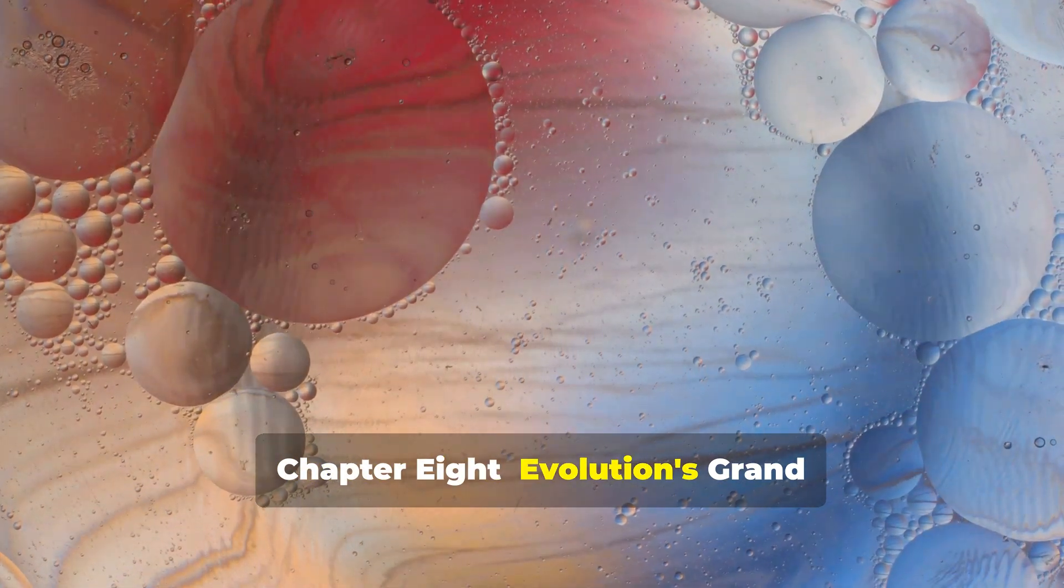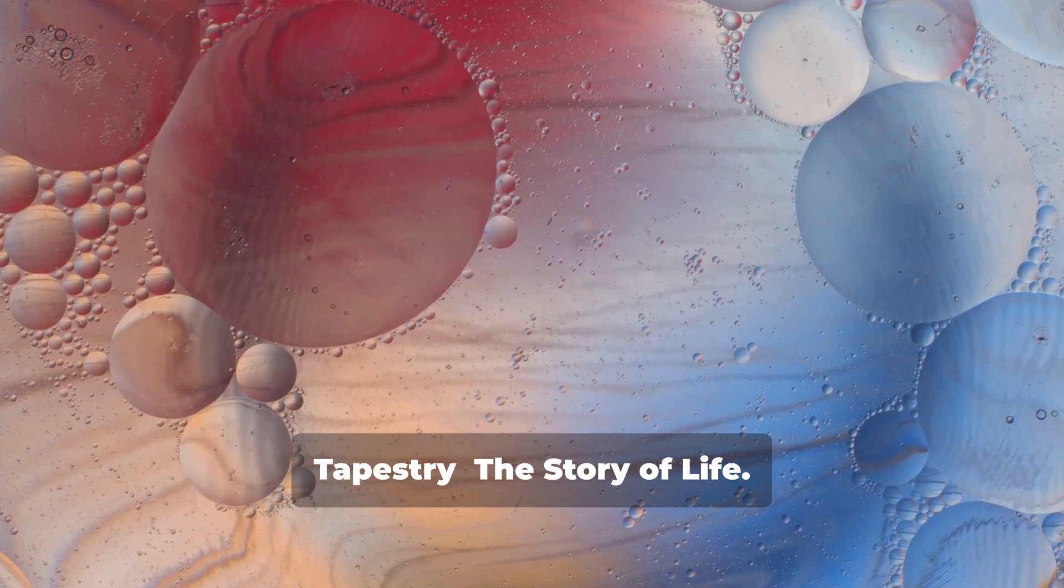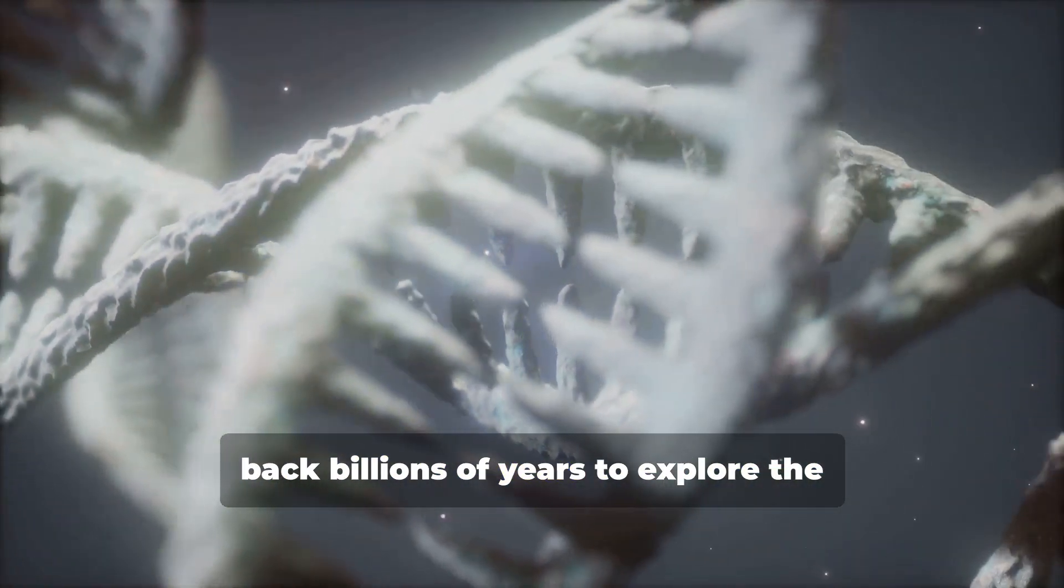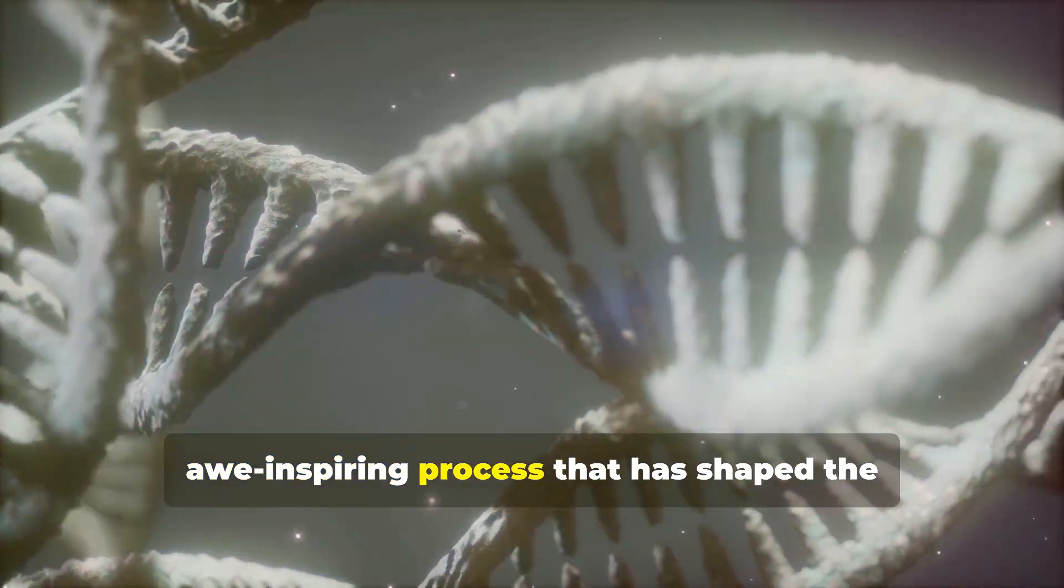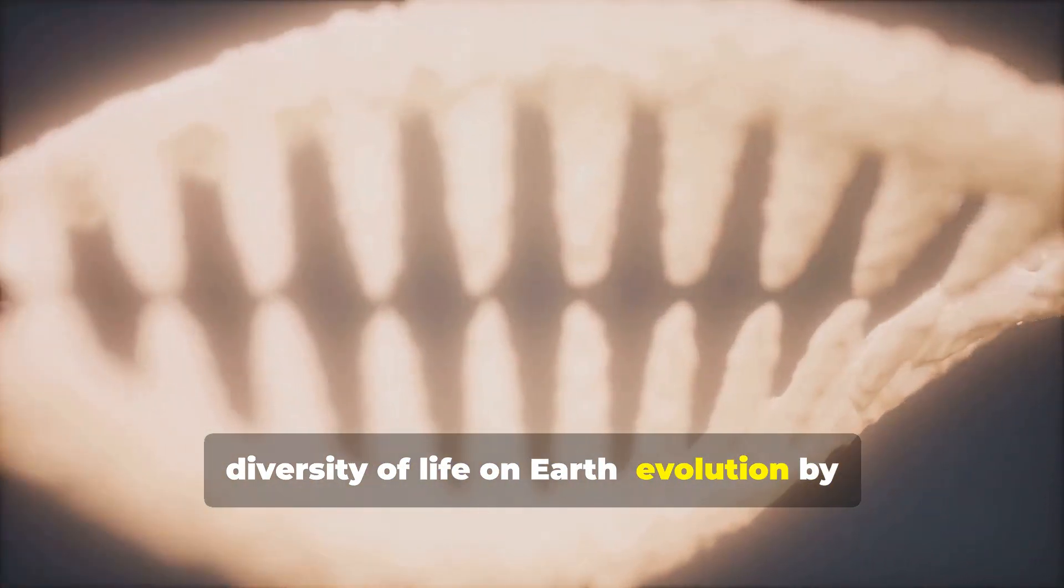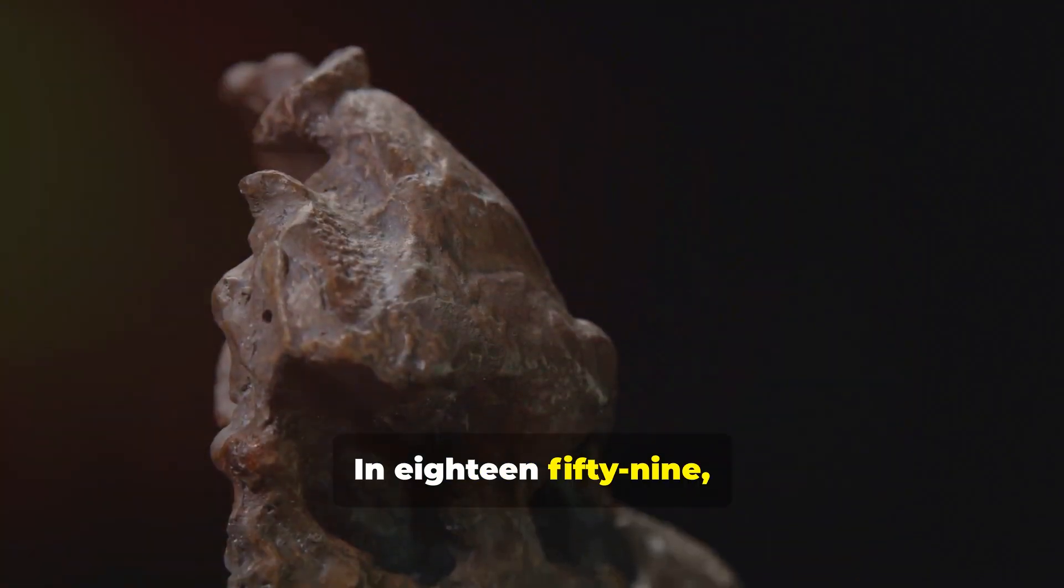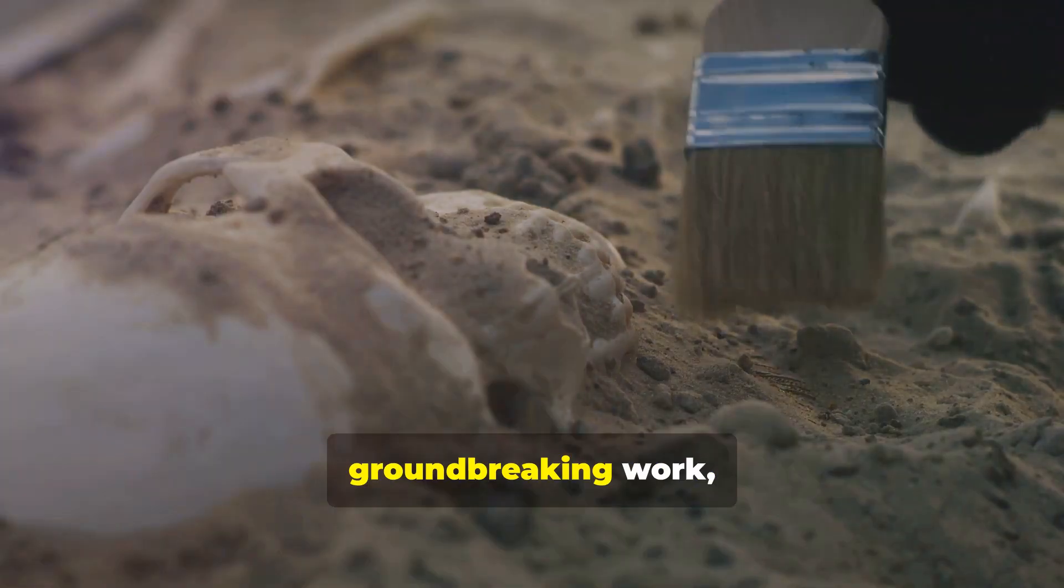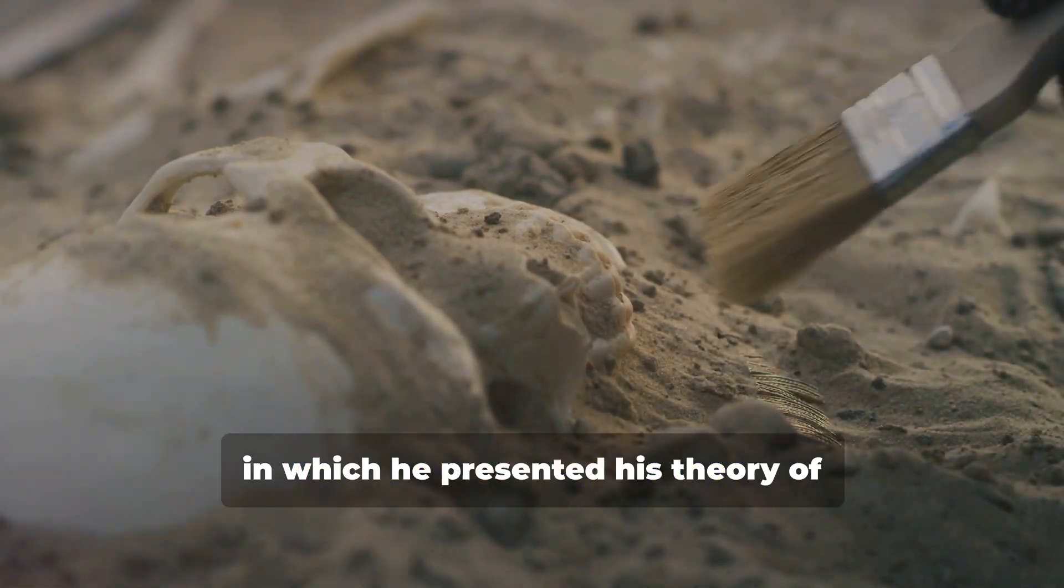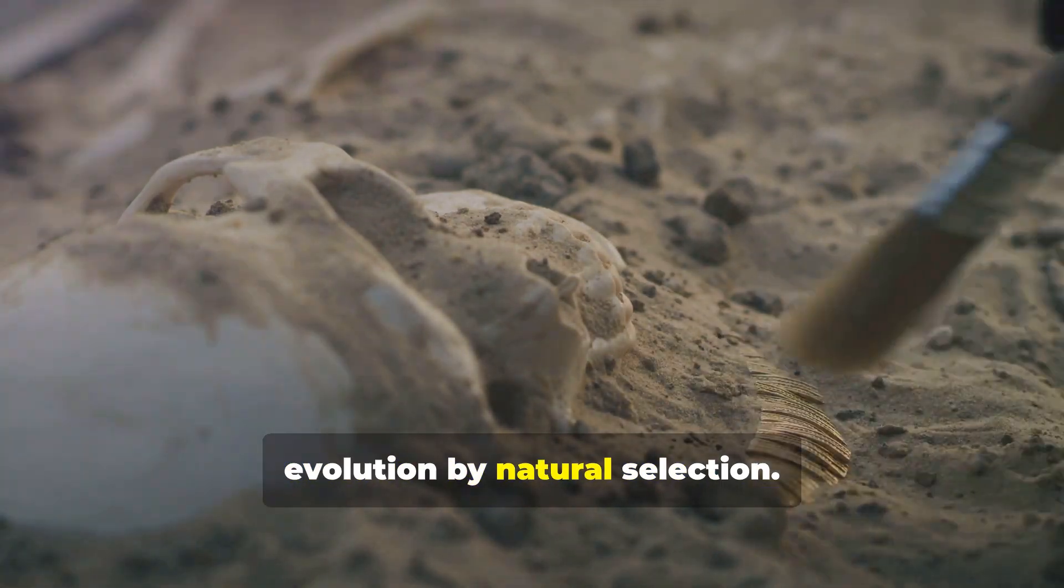Chapter eight, evolution's grand tapestry, the story of life. Our journey through time now takes us back billions of years to explore the awe-inspiring process that has shaped the diversity of life on Earth. Evolution by natural selection. In 1859, Charles Darwin published his groundbreaking work, On the Origin of Species, in which he presented his theory of evolution by natural selection.